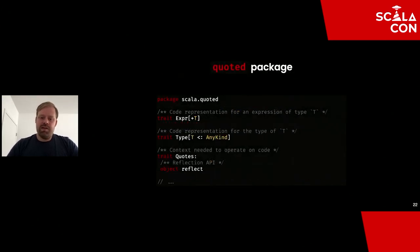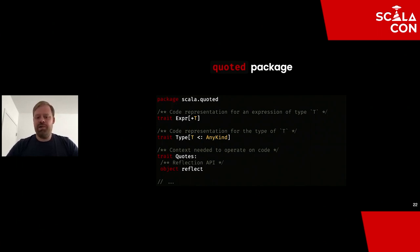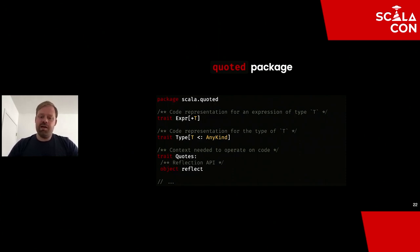Inside the Scala quoted package, we have: Expr, which represents a piece of non-evaluated code; Type, useful for generics, representing an un-erased type including higher-kinded types; and QuoteContext (Quotes), the context on which all macro operations are performed — the entry point to everything macro-related. Inside Quotes, we have the Reflect API, which we'll see shortly.